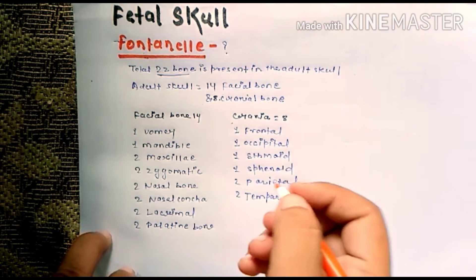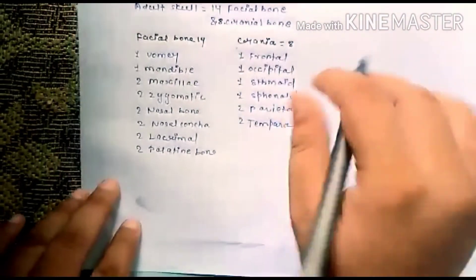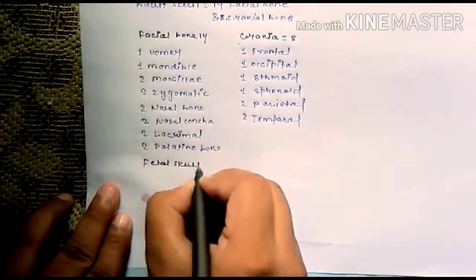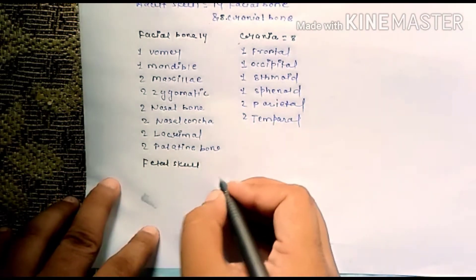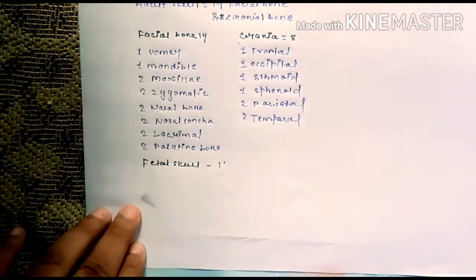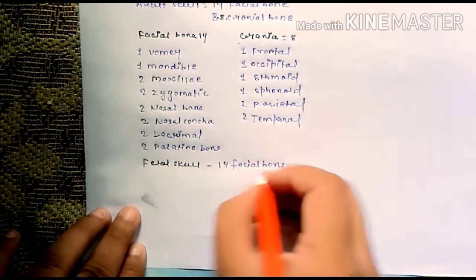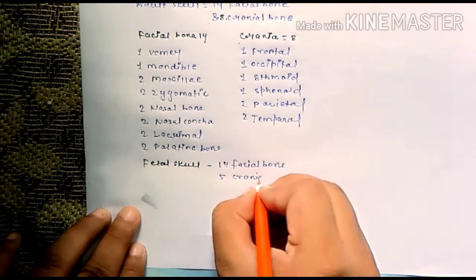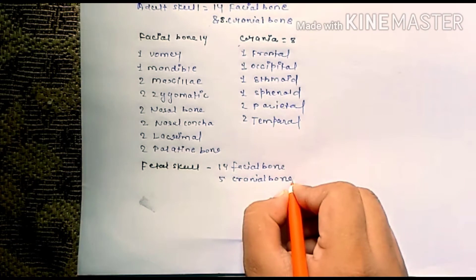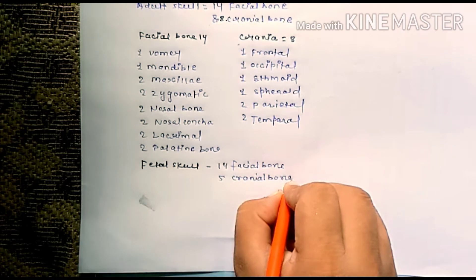Next we talk about the fetal skull. The fetal skull has comparatively fewer bones than the adult skull — 14 facial bones and five cranial bones. The function of the skull is to protect the brain and soft tissues in the fetus.